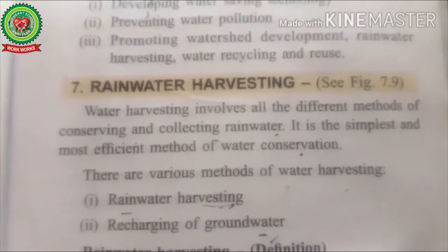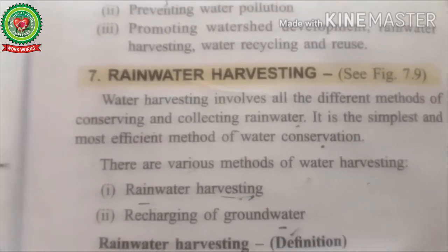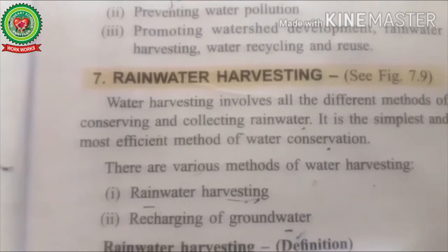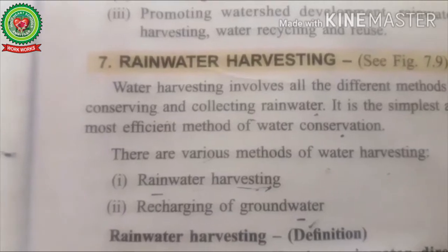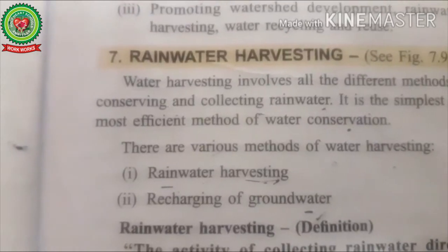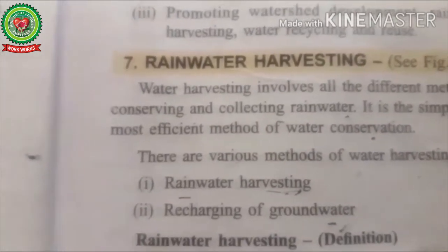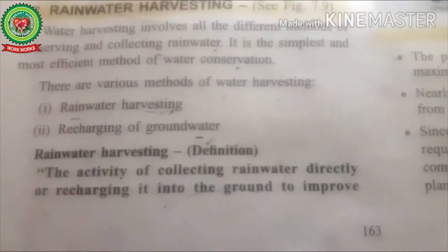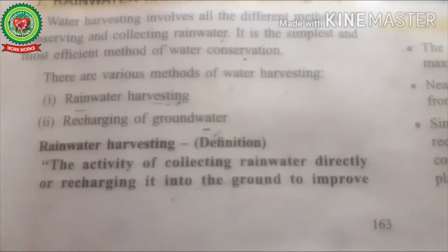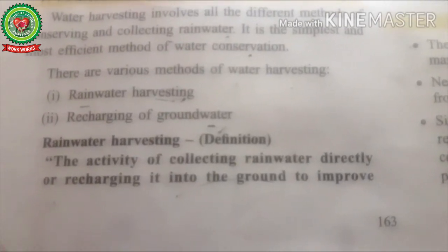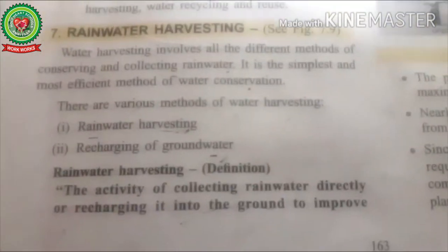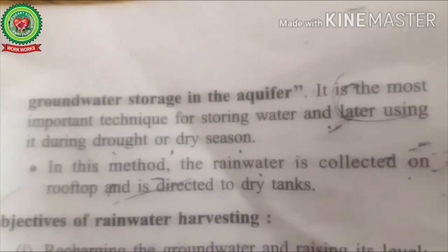Rainwater harvesting, in layman's terms, is the collection of rainwater and recharging of groundwater. Groundwater recharge is a hydrological process where water moves downward from surface water to groundwater. It is the primary method through which water enters an aquifer — an aquifer being a watery basin. The activity of collecting rainwater directly or recharging it into the ground improves groundwater storage in an aquifer.